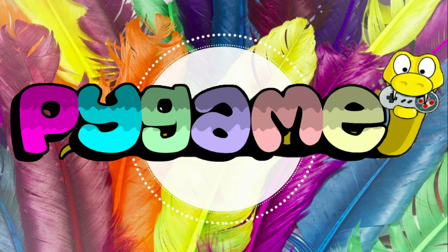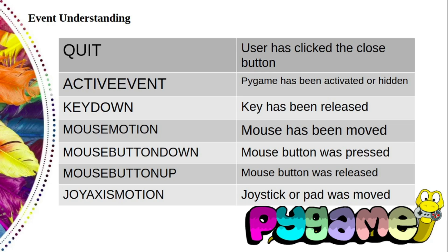Basically, Pygame creates events to inform you of things such as mouse movement and keypresses. Events can be generated at any time, no matter what your program is currently doing. For example, our code may be drawing something on the screen when the user presses some button on the keyboard. We can't react to the event the instant they happen, so Pygame stores them in a queue until you are ready to handle them.